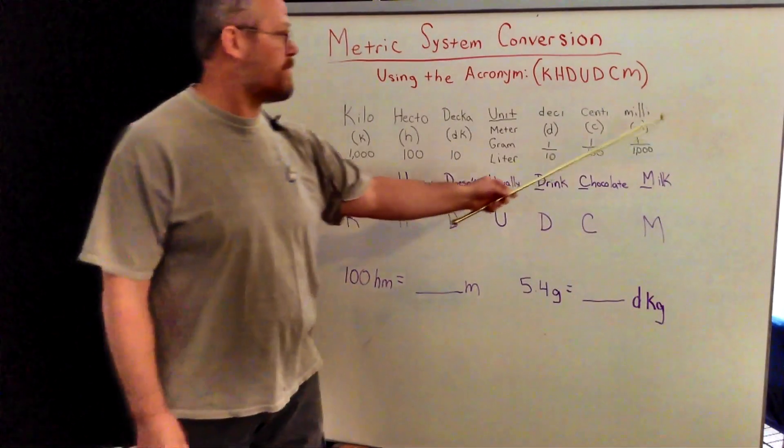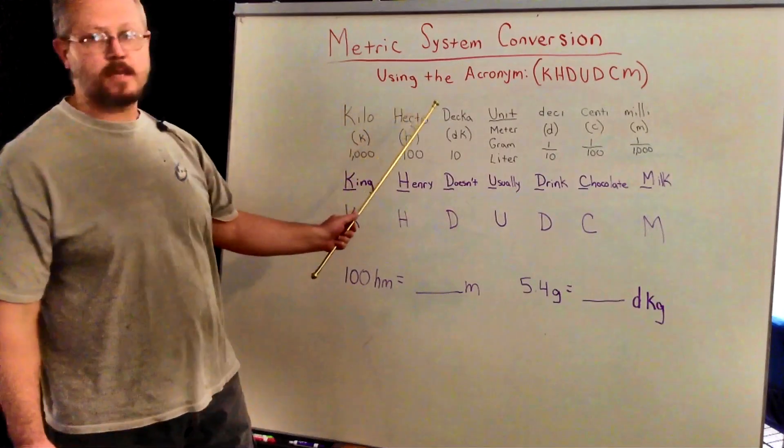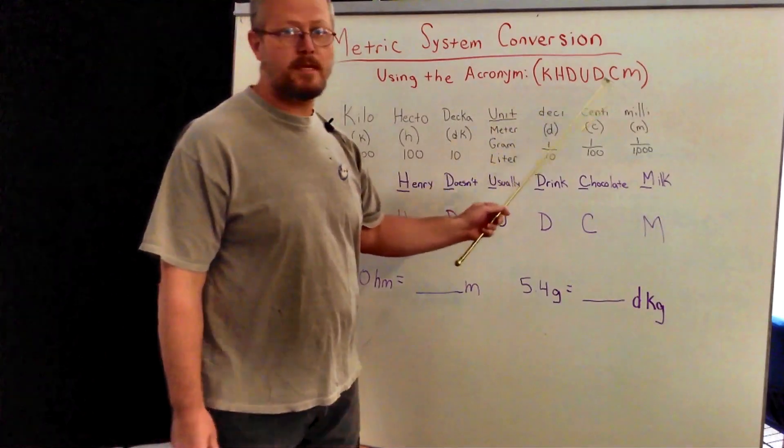This is your old basic system of conversion, you got the kilo, hecto, deca, the unit which is meter, grams, and liter, deci, centi, and milli.